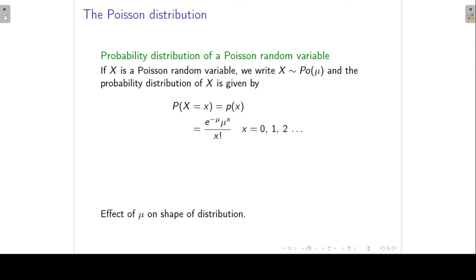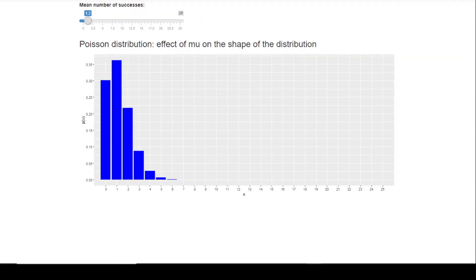The Poisson distribution has only one parameter, namely mu. What is the effect of this parameter on the shape of the distribution? Here we have a Poisson distribution with parameter 1.2. The average is 1.2, and you can see that it gives us a distribution that is skewed to the right.